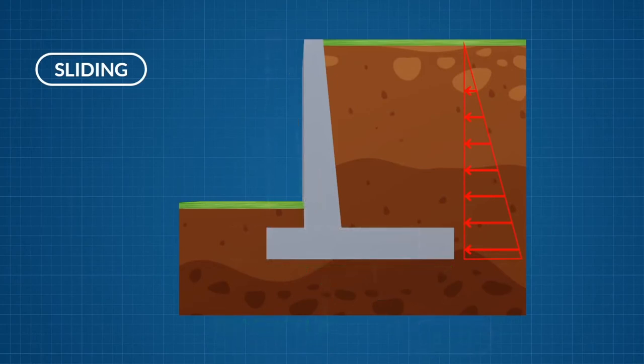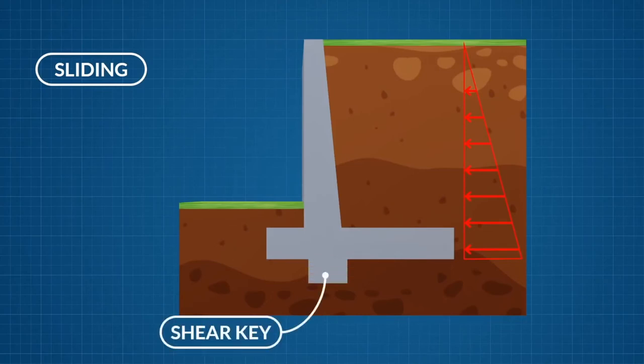If the active earth pressure is high and the wall is failing in sliding, then a shear key can be introduced to provide additional sliding resistance.